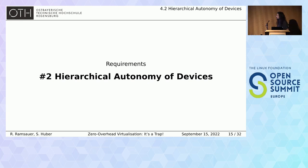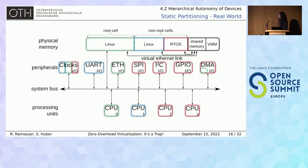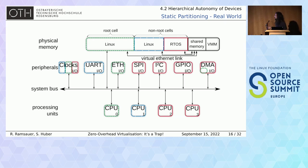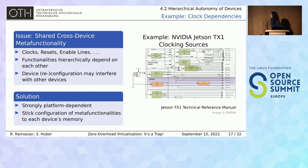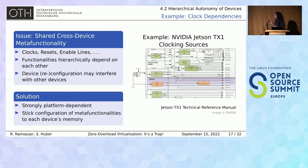The second requirement is the hierarchical autonomy of devices. Clocks are shared somehow between our different cells; they are responsible for setting up the operational speed of devices, and we need parts of their functionality for multiple cells. Looking at a schematic of the clocking sources of the NVIDIA Jetson TX1, they hierarchically depend on each other. If one cell changes some clocks, other cells may be affected — we don't want that. The solution is to stick the configuration of meta-functionality to each device's memory.